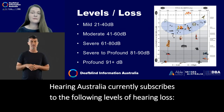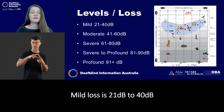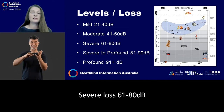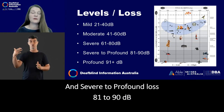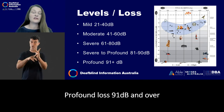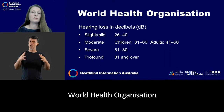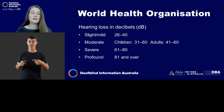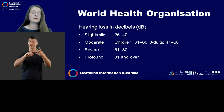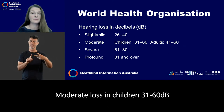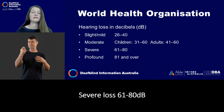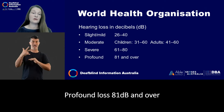Hearing Australia currently subscribes to the following levels of hearing loss: mild loss is greater than 21 to 40 decibels; moderate loss, 41 to 60 decibels; severe loss, 61 to 80 decibels; severe to profound loss, 81 to 90 decibels; and profound loss, 91 decibels and over. The World Health Organization uses the following classification: slight to mild loss, 26 to 40 decibels; moderate loss in children, 31 to 60 decibels; moderate loss in adults, 41 to 60 decibels; severe loss, 61 to 80 decibels; and profound loss, over 81 decibels.